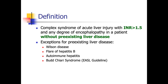Severe acute liver injury is defined with INR more than 2.2. The exceptions for pre-existing liver disease in ALF include Wilson disease flare, hepatitis B, autoimmune hepatitis, and according to EASL guidelines, Budd-Chiari syndrome — where acute worsening of clot formation leading to liver failure could potentially be called acute liver failure.